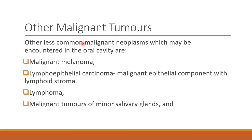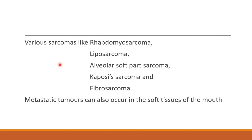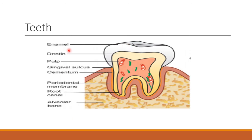Other less common malignant neoplasms in the oral cavity include malignant melanoma (tumor of melanocytes), lymphoepithelial carcinoma (malignant epithelial component with lymphoid stroma), lymphoma, and malignant tumors of the minor salivary glands. Various sarcomas can also occur, including leiomyosarcoma (tumor of skeletal muscle), liposarcoma (tumor of adipose tissue), alveolar soft part sarcoma, Kaposi's sarcoma, and fibrosarcoma. Metastatic tumor can also occur in the soft tissue of the mouth from other sites.